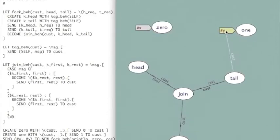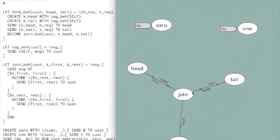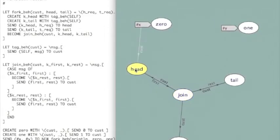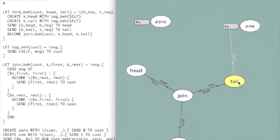So both messages are sent. From the perspective of the join, because I've become a join now, from the perspective of the join, the head reference is the first actor, and the tail reference is the rest. From the perspective of head and tail, the join is the customer in both cases. And there are instances of this tag behavior.